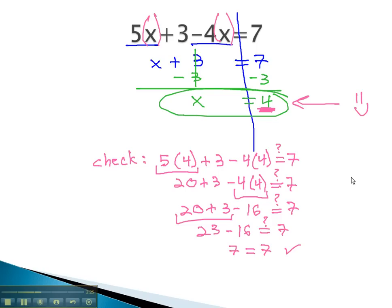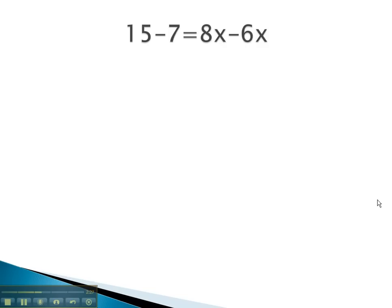Let's try another example where we're asked to find the value for x that makes the equation true, where we have to do some simplifying first. As usual, we always start by balancing on the equal sign. In this problem, we find simplifying on both sides. We can do 15 minus 7, which is 8, is equal to 8x minus 6x. Those are like terms, and so we can combine them to 2x.